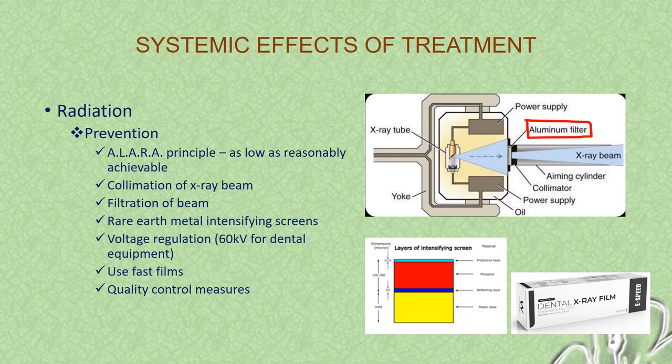To prevent radiation effects, we must follow the ALARA principle — as low as reasonably achievable. We can use collimation of the X-ray beam, filtration of the beam, and rare earth intensifying screens, which reduce the intensity of X radiation. Voltage regulation is 60 kV for dental equipment. Use of fast film is also helpful as fast films allow shorter exposure times. Quality control measures must be constantly enforced in premises with radiographic equipment.